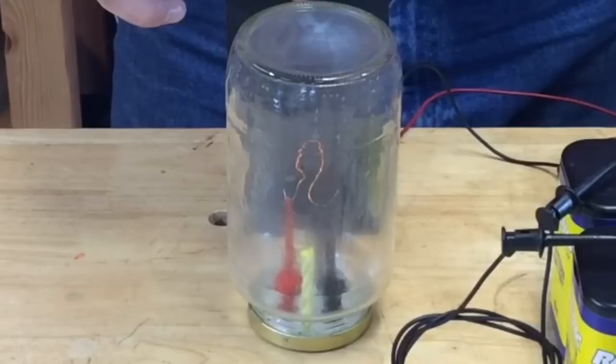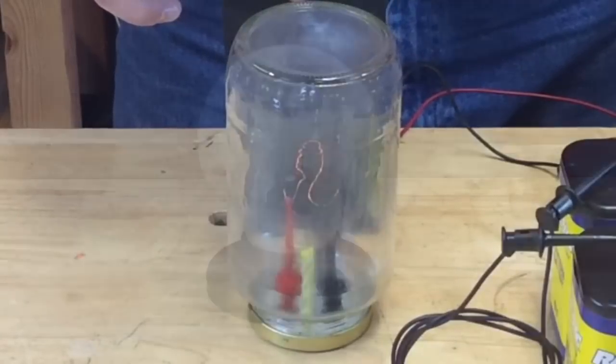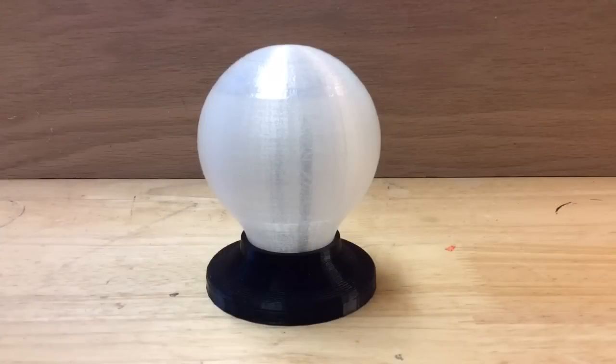Now of course today we have LED light bulbs and they're very common everywhere. So I decided to 3D print my own light bulb design and here it is. It's got a semi-transparent bulb and a black base. Inside I used a super bright jumbo LED, a resistor to limit the current, and a 9 volt battery. Now it's not super bright but it was fun to build. Let me show you how I did it.